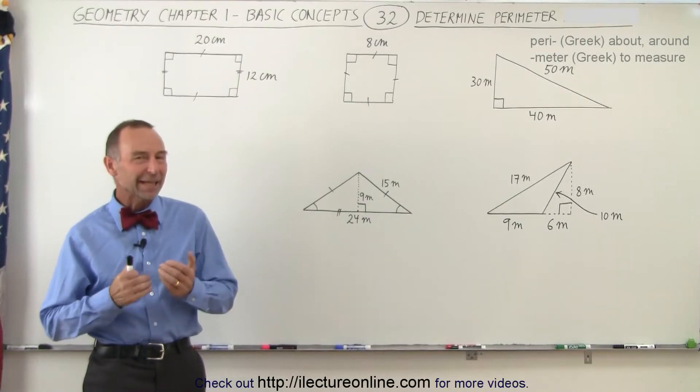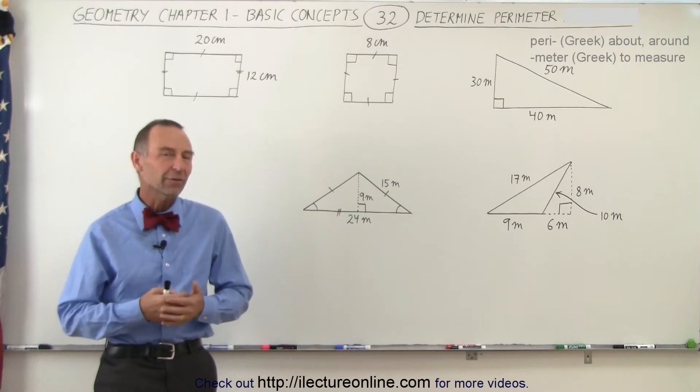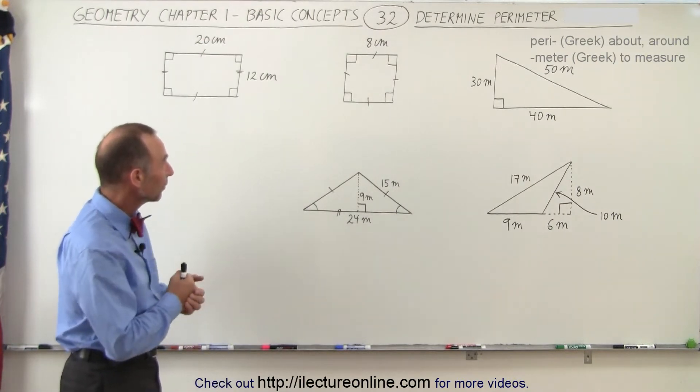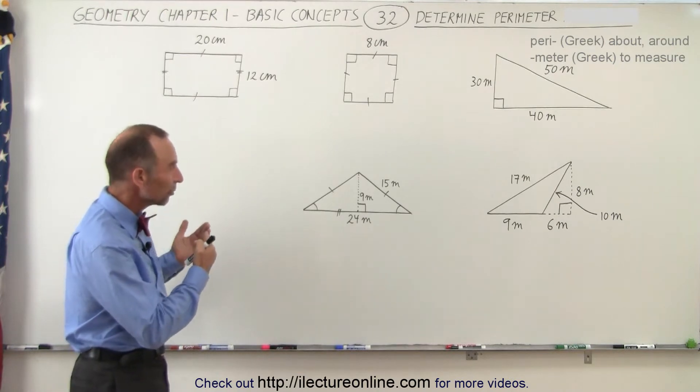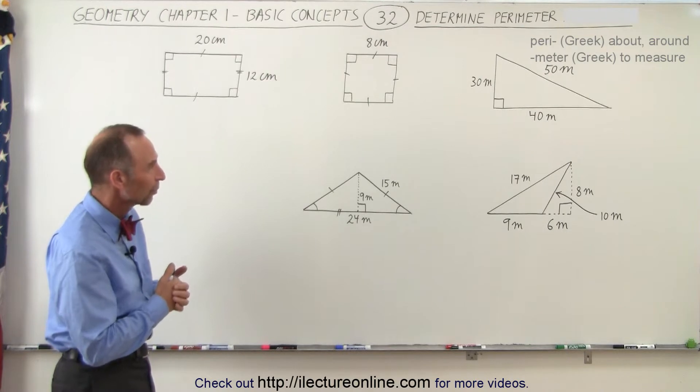Welcome to our lecture online. Here we're going to define what a perimeter is and what the area is of a polygon. In particular, we're going to be using it for what we call quadrilaterals, polygons with four sides, and triangles, polygons with three sides.